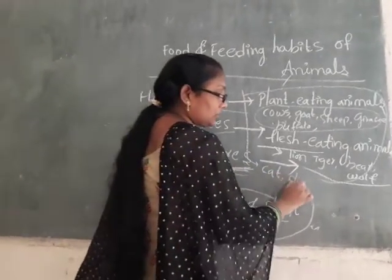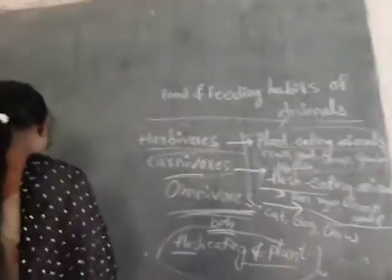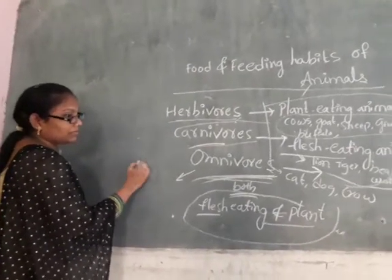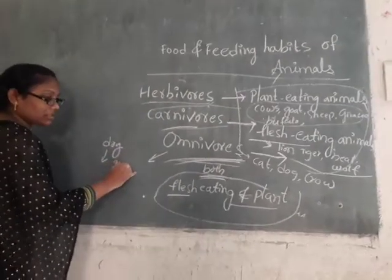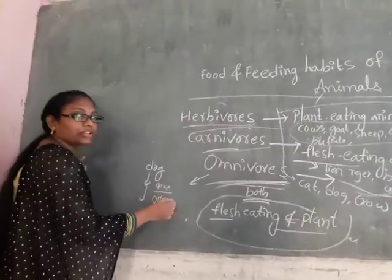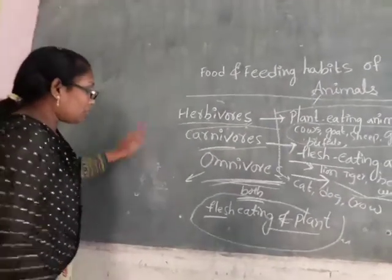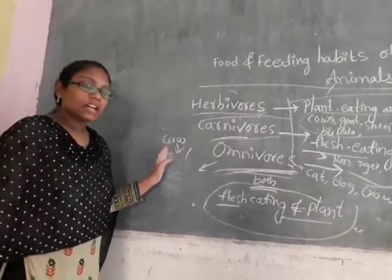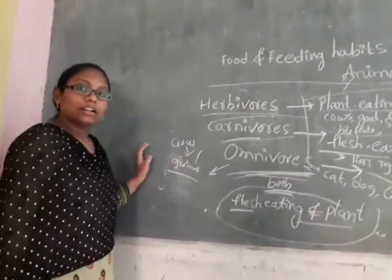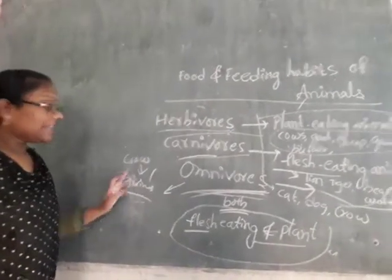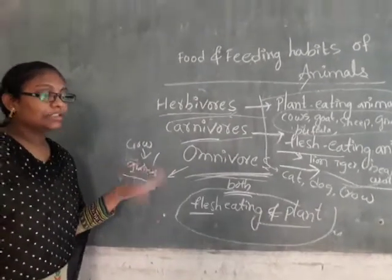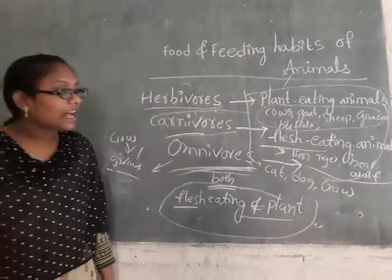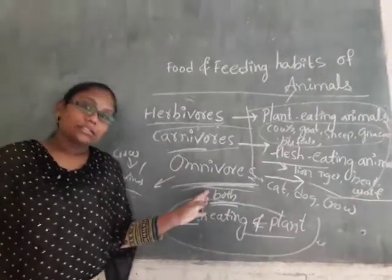Examples of omnivores: cat, dog, crow. Dog eats rice and also the flesh of other animals — both. Crow also eats flesh of other animals and rice, small seeds, grains, and worms. Bears also eat both plants and other animals. Animals that eat both plants and flesh are called omnivores.